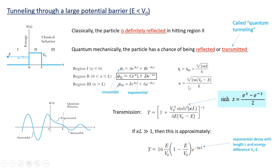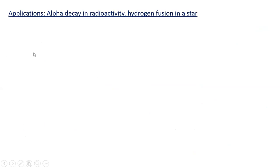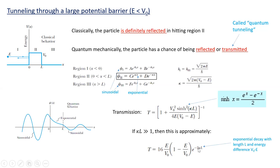There's a slightly more usable approximate expression: if κ·L is much greater than one, then T is approximately given by a simpler expression where you can explicitly see the transmission coefficient decreasing as a negative exponential of κ times L. Kappa involves the difference in energies between the height of the potential V-naught and the incoming energy E. The greater the gap between incoming energy and the barrier, the greater κ is; and the greater the length L the particle has to tunnel, the smaller T becomes — an exponential decay with both L and (V-naught minus E).